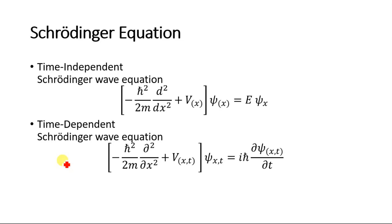Hello everyone, welcome to EasyEdu. In today's video we will learn about the Schrödinger wave equation. There are two forms: the time-independent Schrödinger wave equation and the time-dependent Schrödinger wave equation. In a previous video we derived the time-independent form, and today we will derive the time-dependent Schrödinger wave equation.